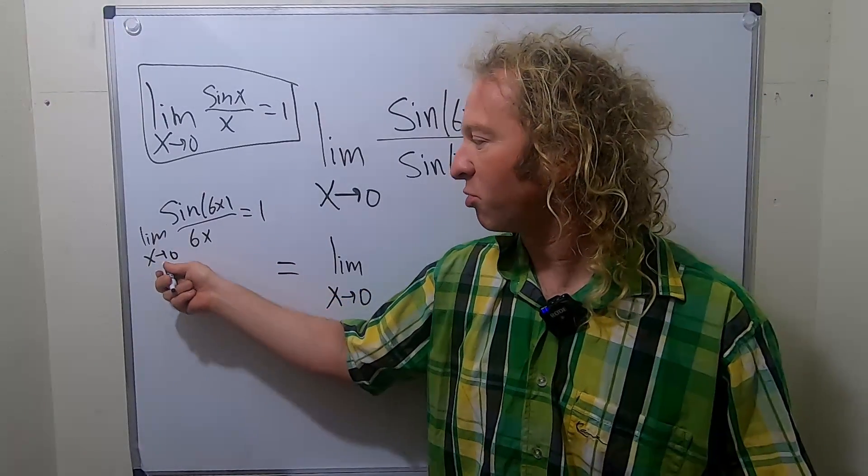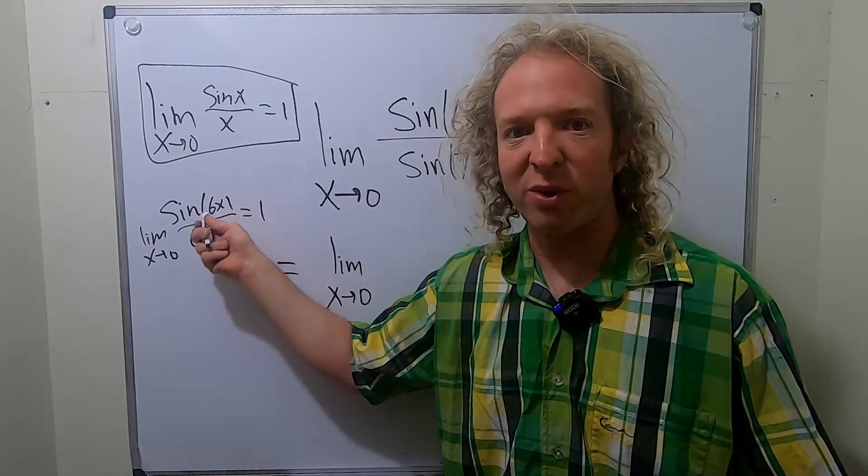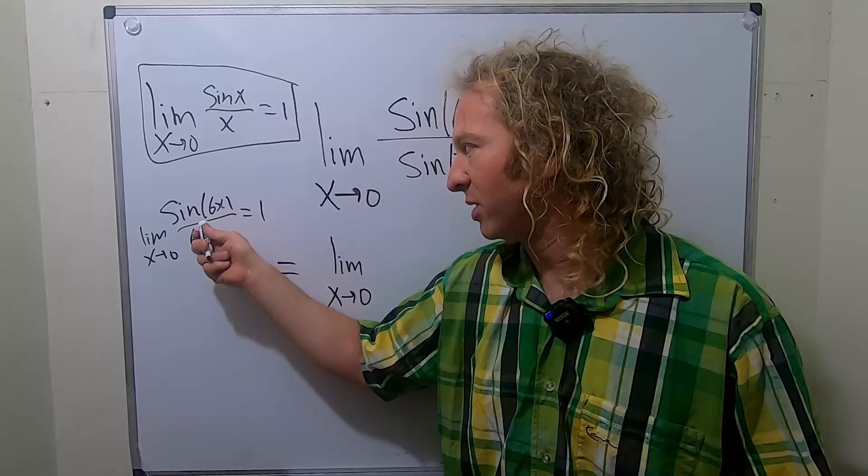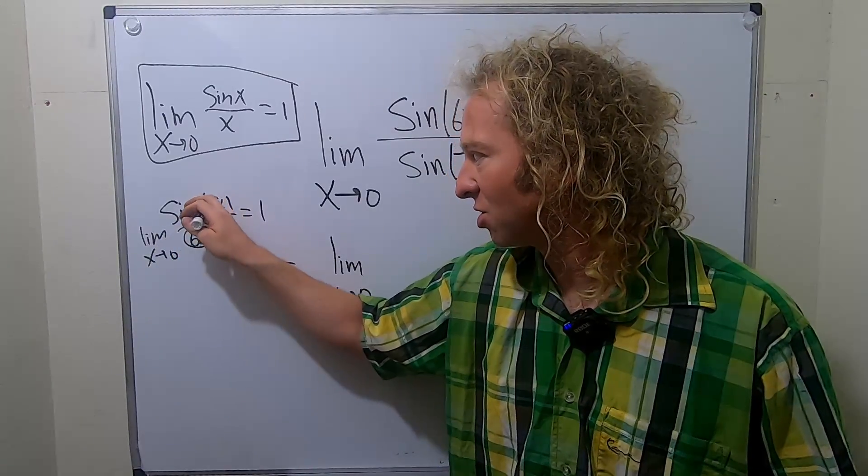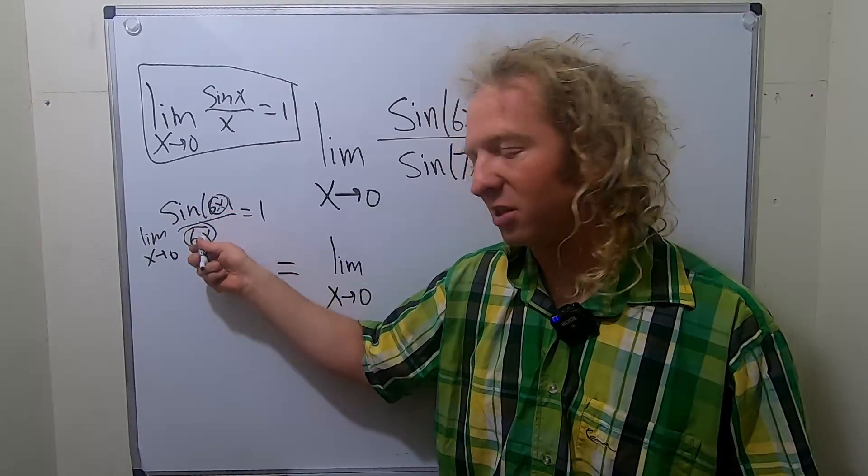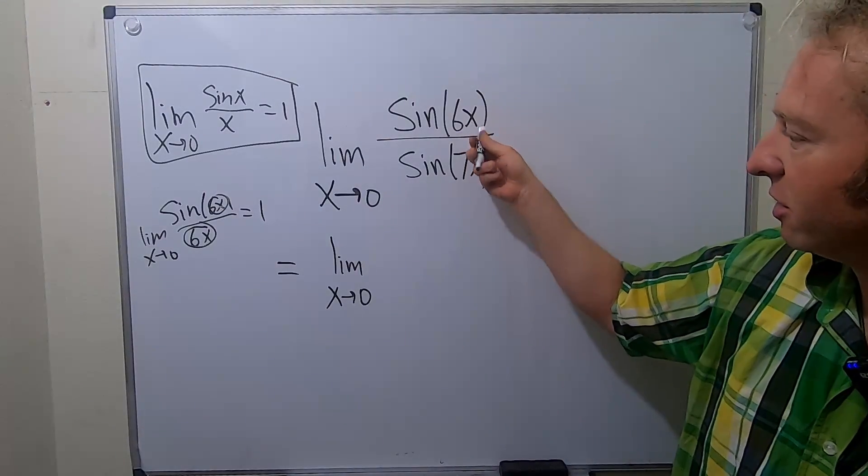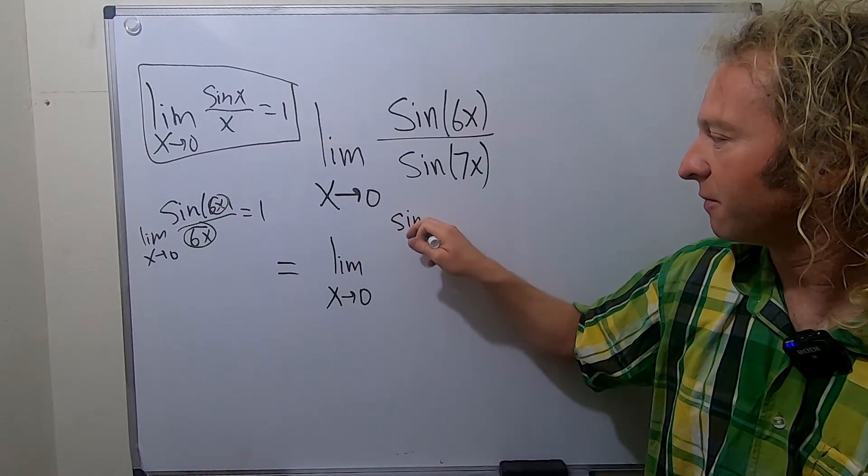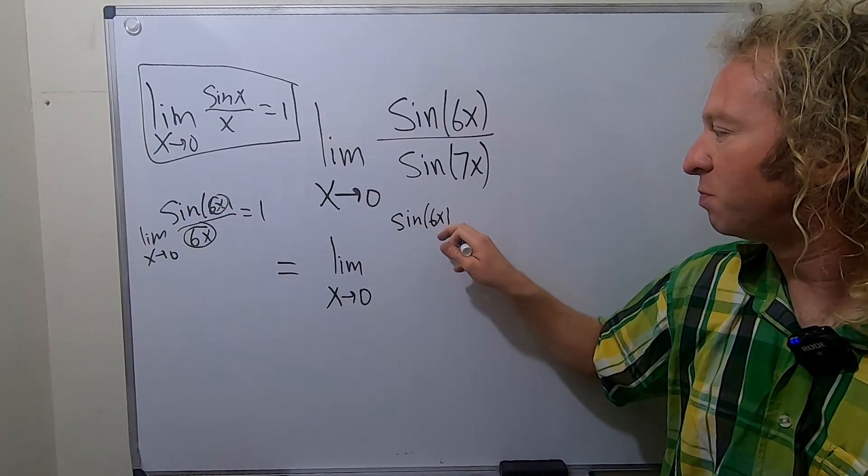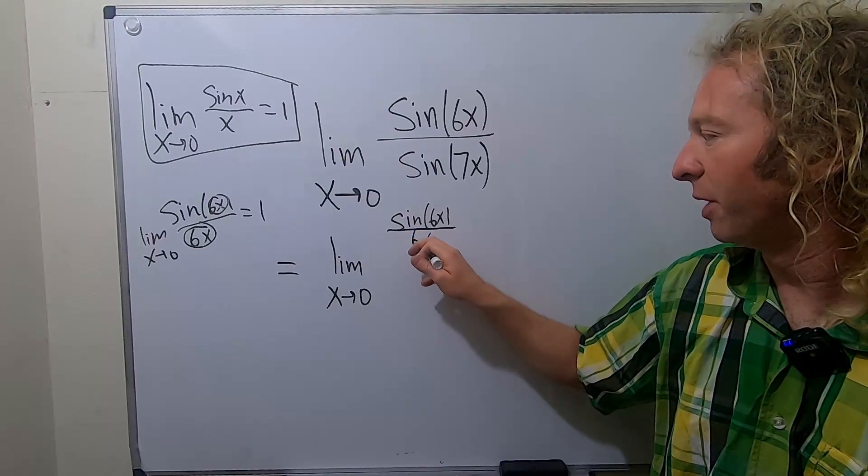And the reason is when x approaches zero, 6x approaches zero at the same exact rate. So these match. Whenever these match and this is going to zero, you're going to get one. So the idea here is to write sine 6x and then just put a 6x there on the bottom.